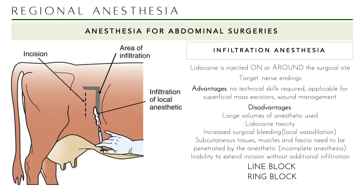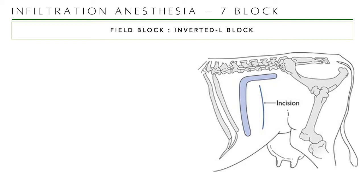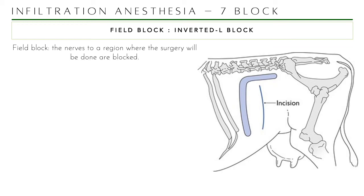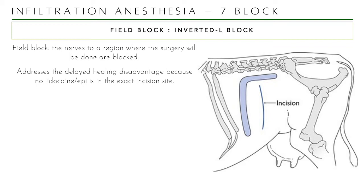Examples of infiltration anesthesia include line block, ring block, and field block. The most commonly used is the inverted-L field block. In this approach, you are targeting nerves in the region where surgery will be done, using anatomical landmarks: the transverse processes of the lumbar vertebrae for the horizontal infiltration, and the caudal border of the last rib for the vertical infiltration. This addresses the delayed healing disadvantage because the lidocaine and epinephrine are not placed directly in the incision site, but in the places where the nerve endings controlling that incision area are located.